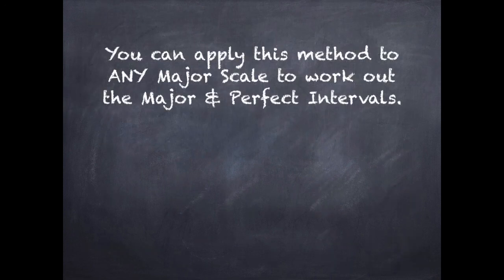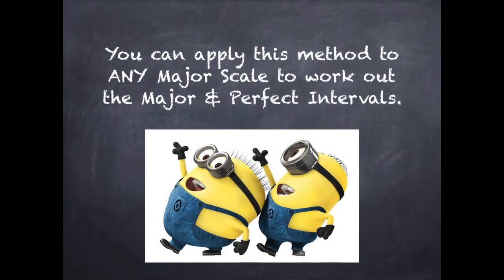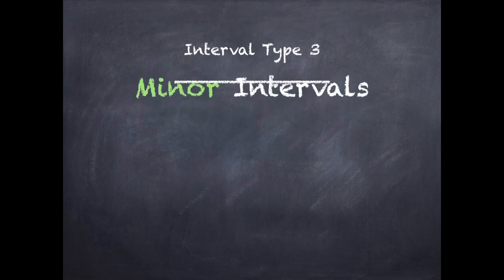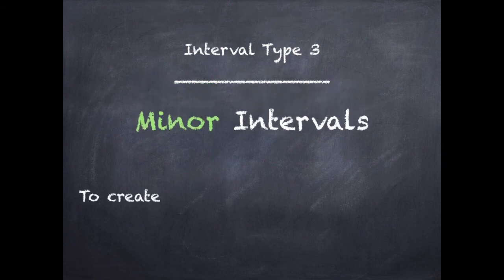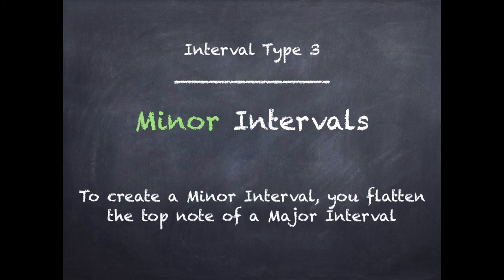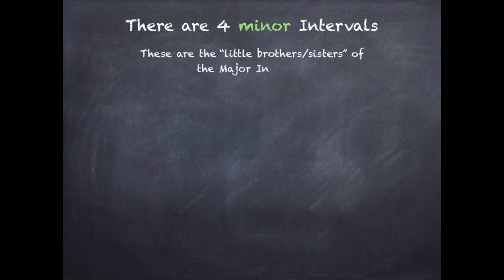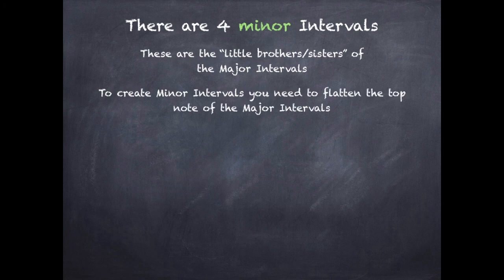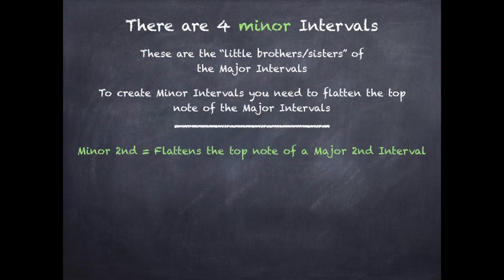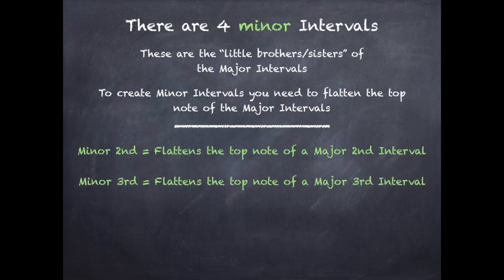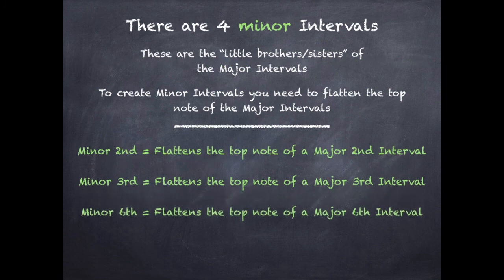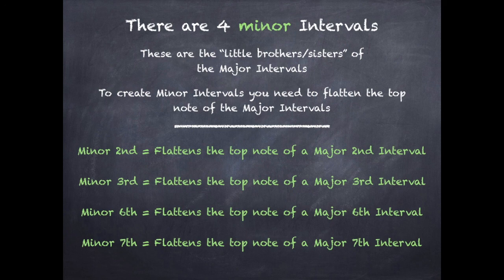You can apply this method to any major scale to work out the major and perfect intervals within it. Interval type number three: minor intervals. To create a minor interval, you flatten the top note of a major interval. There are four minor intervals — minor second, minor third, minor sixth, and minor seventh — the little brothers and sisters of major intervals.